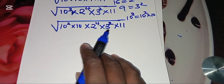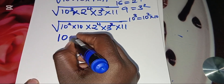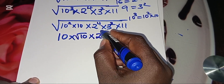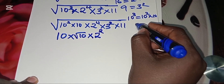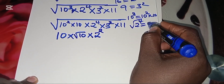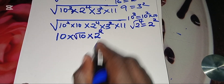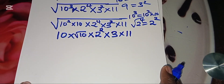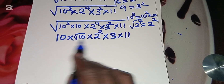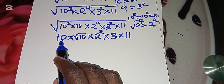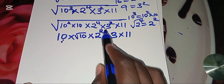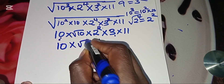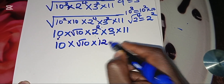Taking the square root: the square root of 10 squared is 10, the square root of 2 raised to power 4 is 2 squared which is 4, and the square root of 3 squared is 3. So we have 10 times 4 times 3, which is 12, and then we have 10 times square root of 10 times 12, giving us 12 times 10 equals 120, times square root of 11.